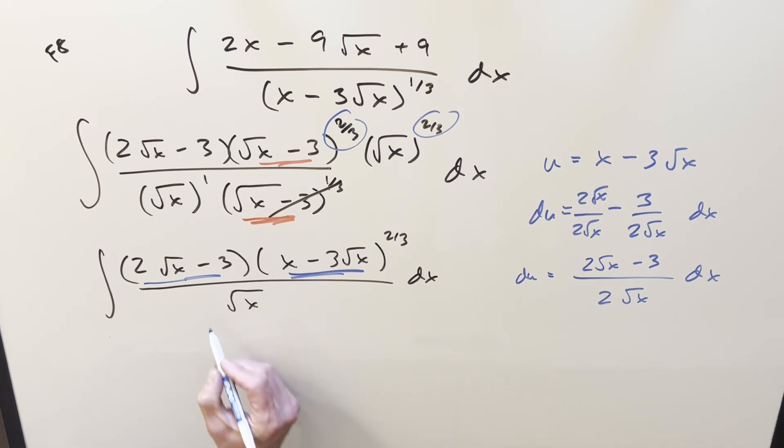This 2, I can create that, right? Just multiply a 2 here. So we're just multiplying by 1. And so if I combine this with the dx, that's going to be our du value. So go ahead and substitute. We have the 2 out front. This becomes just u to the 2/3. And everything else is going to be du.